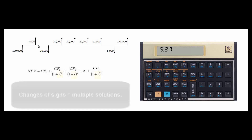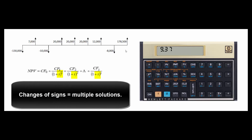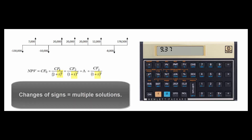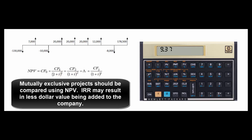The downside of IRR: if there are sign changes in the cash flows, there may be multiple solutions to the equation where the discount rate makes future cash flows' present value equal the initial cash flow. Also, IRR can lead to misleading decisions on mutually exclusive projects — you might choose a smaller project with a higher rate of return but that adds less dollar value to your company.